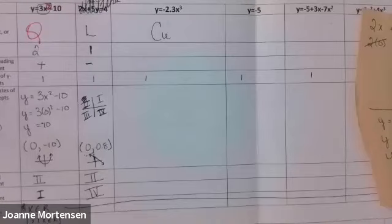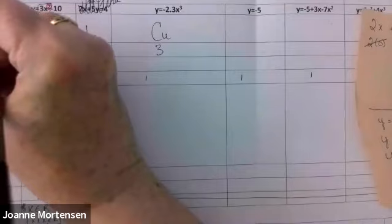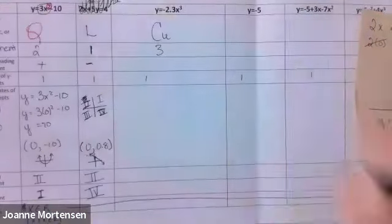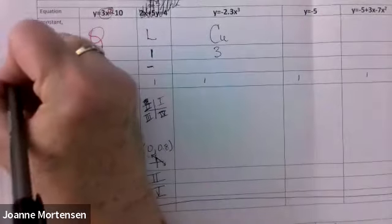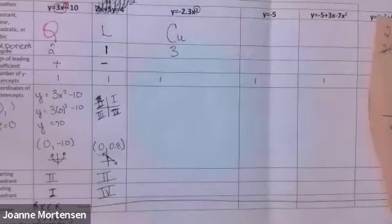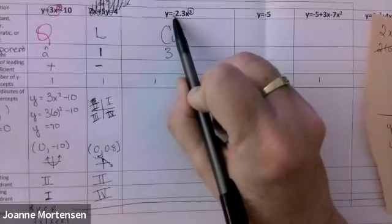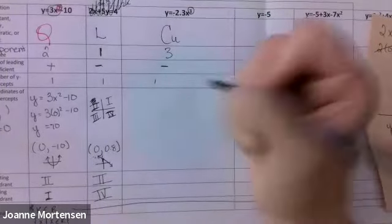What's the degree? Three. So degree is three — your highest exponent. Sign of the leading coefficient: negative. There's only one term here, and it's negative.